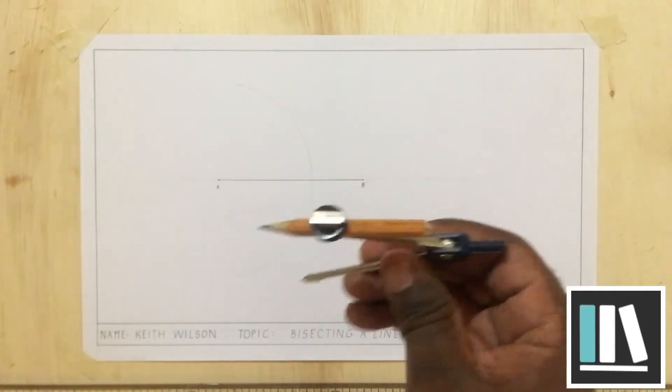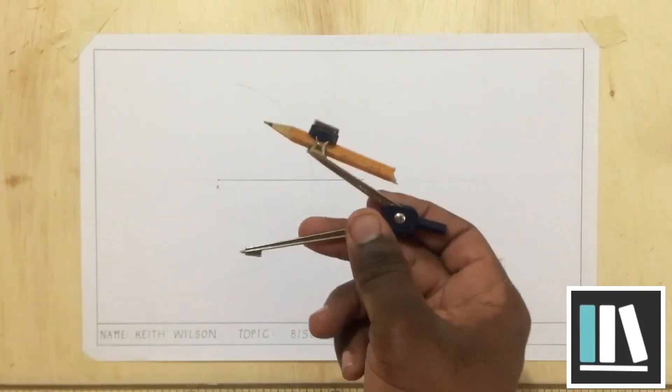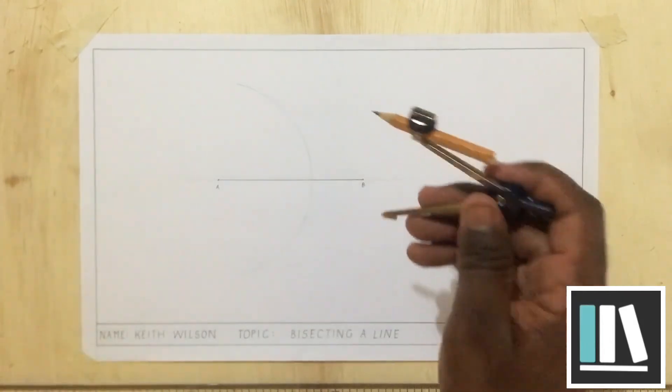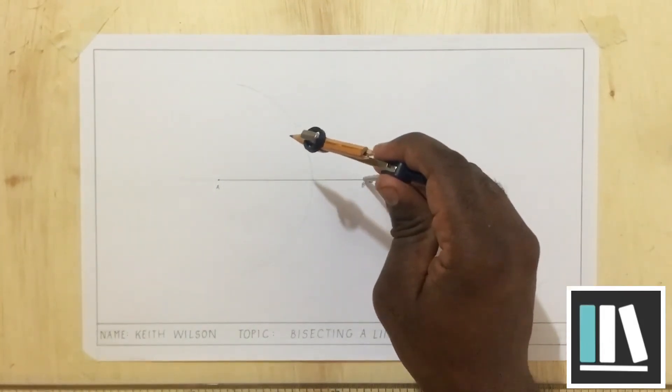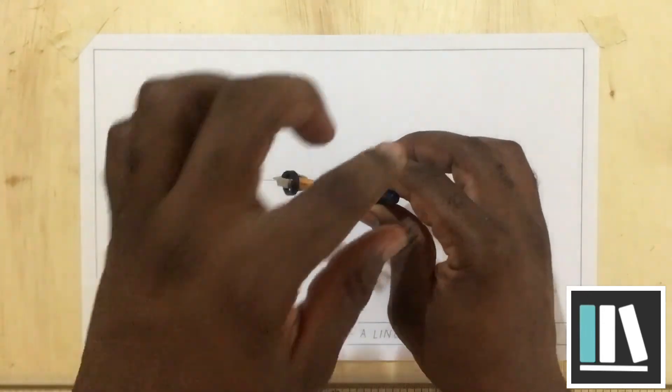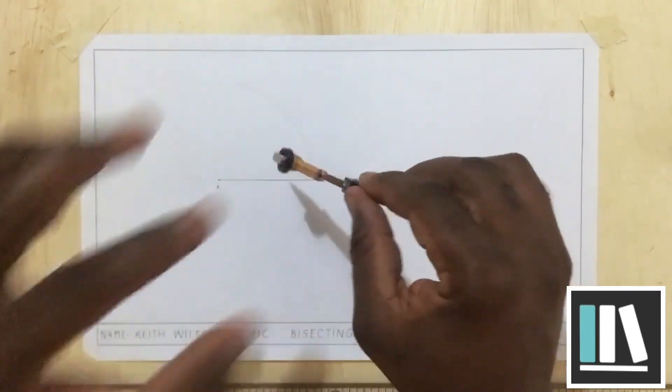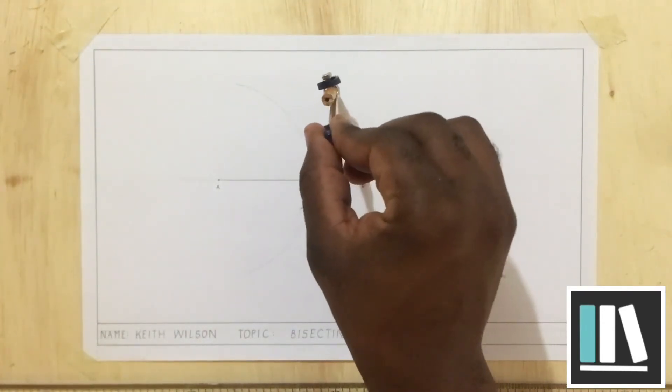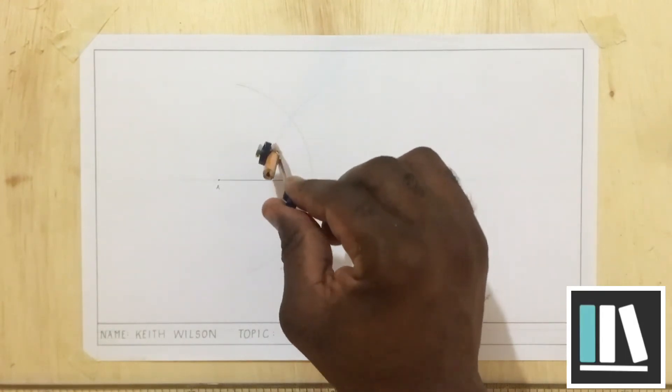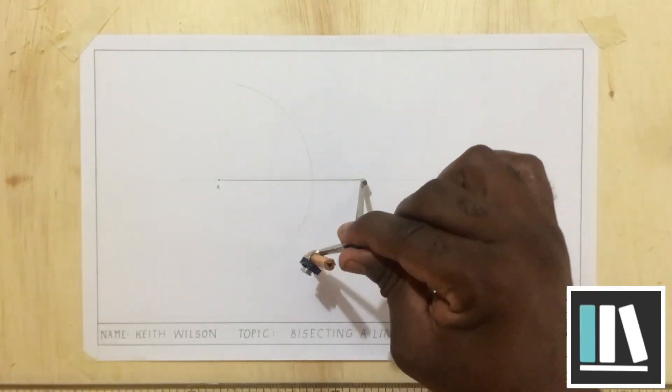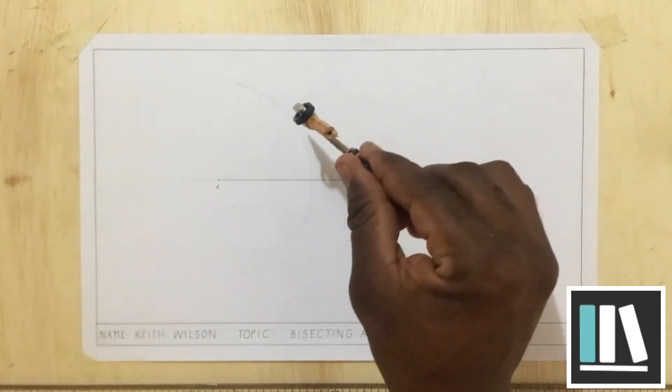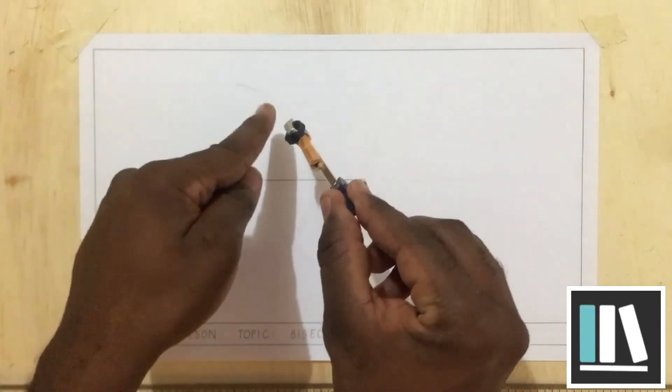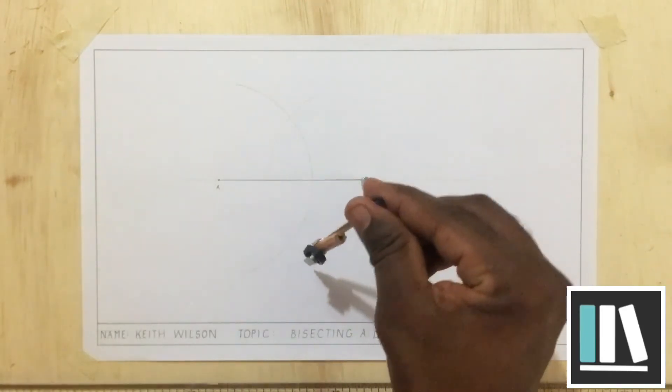I am going to do the same at point B, ensuring not to shift the compass. I am placing it at point B, the compass point that is. Without shifting the compass, I am going to swing another arc. It must be ensured that the arcs intersect at the top of the line and at the bottom of the line.